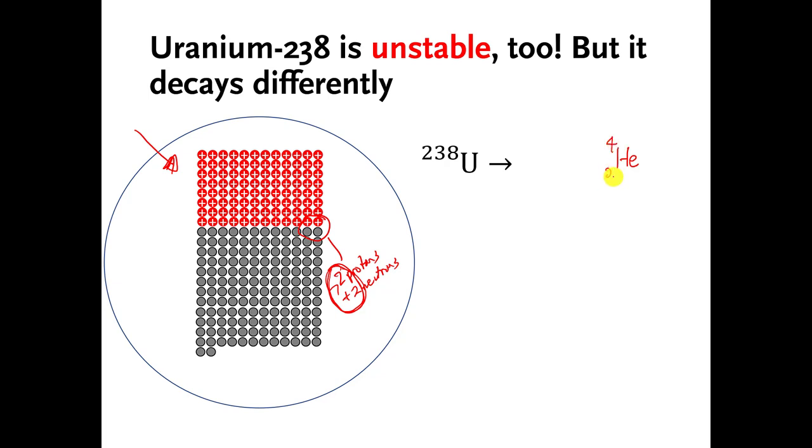If we want, we can put a two in the lower left because the stuff that got fired off has two positive charges. That might be helpful later. If you notice, there are no electrons that got fired off here. So this particular isotope of helium also has a charge of two plus because it has two positive charges and no electrons to cancel out those charges.